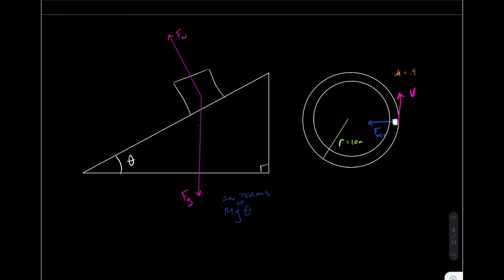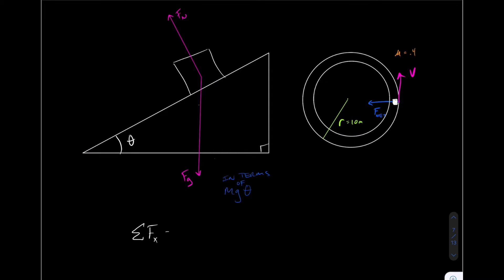The sum of the forces in the x-direction is going to equal the net force. Starting with the y-direction may be more reasonable, because the car stays in this location — it's not going to move up or down the ramp. Its displacement in the y-direction is zero, so there is no net force in that direction. However, there must be a net force in the horizontal direction pulling it toward the center of the circle for it to move in a circle — that is a requirement.